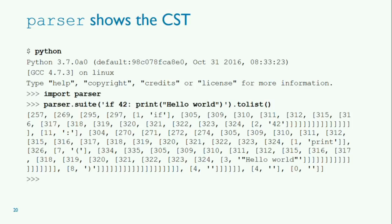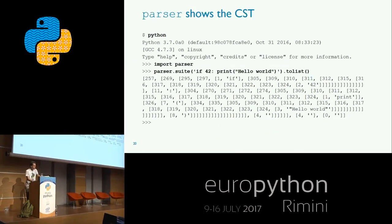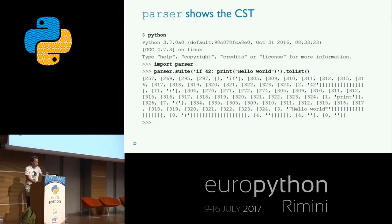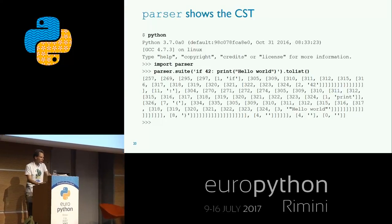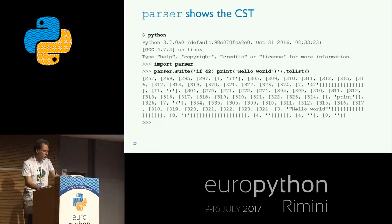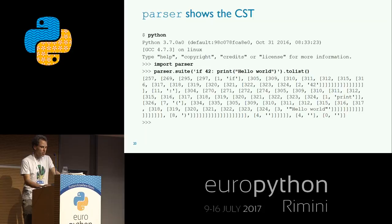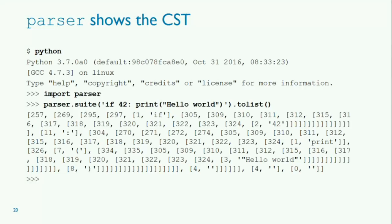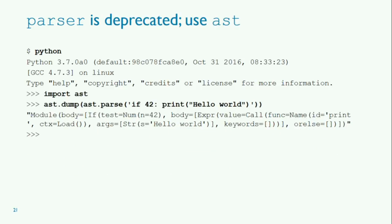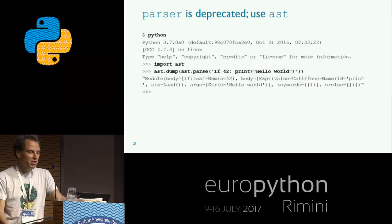To show this — CST stands for concrete syntax tree — there is a standard module called parser. It can show you the CST serialized into a structure of nested lists. Every list has two elements: the first is the symbol ID (0 to 56 for terminals, above 256 for non-terminals), and the second item is the token string for terminals or a nested sub-tree for non-terminals. The documentation for the parser module actually says people shouldn't use it because there is a better module called AST — abstract syntax tree — which is a second kind of syntax tree that Python uses.